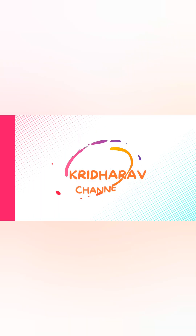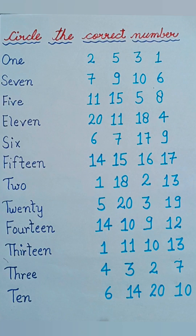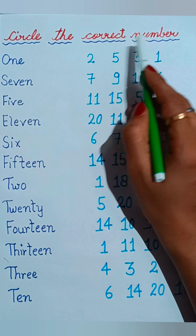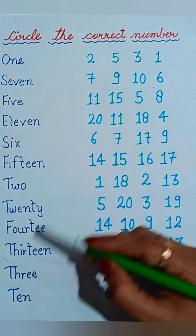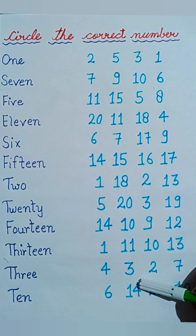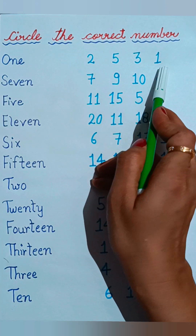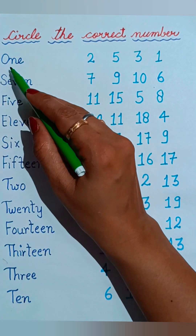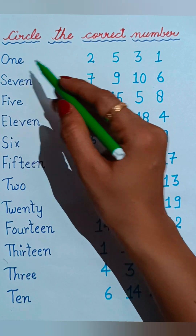Hello kids, welcome back to my channel. Today's topic is 'Circle the correct number.' At the left side the number name is given, and at the right side their number is given. We have to circle the correct number with their number name. Let's start from the first one.